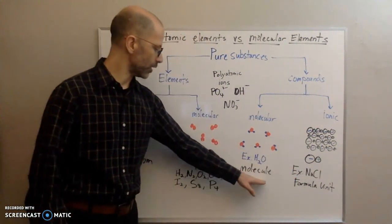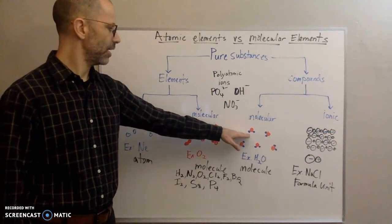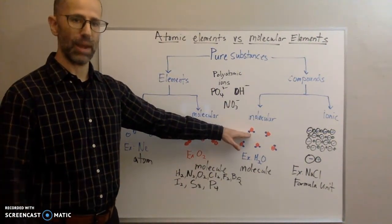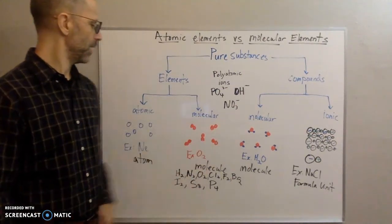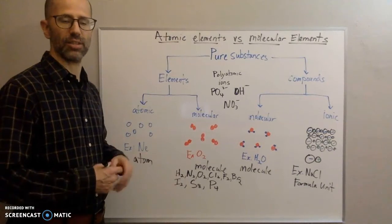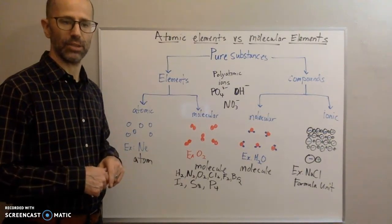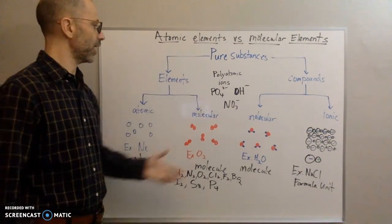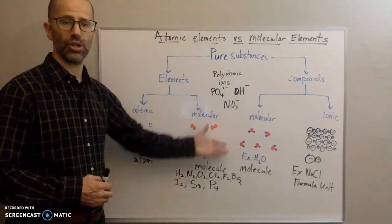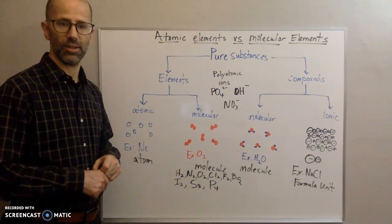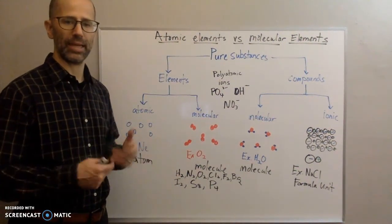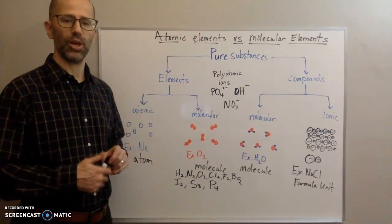We talk about molecules with any substance that has more than one atom bonded together by covalent bonds, and we talk about atoms as things that are just atoms that are not bonded together. So this is a picture of how the substances are divided. I hope this is helpful in making this distinction and I hope you enjoyed the video.